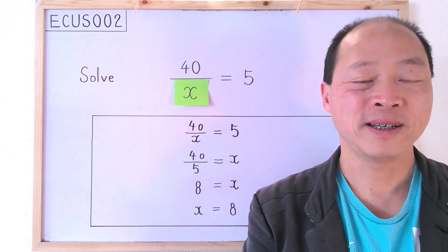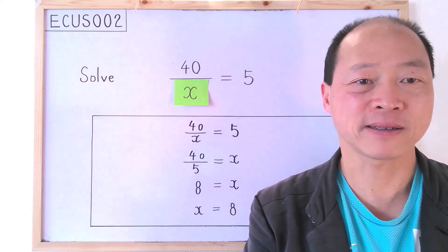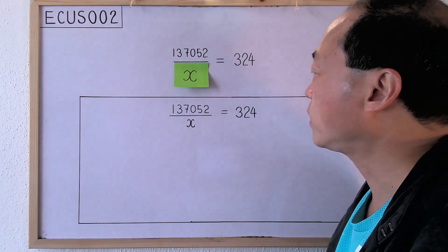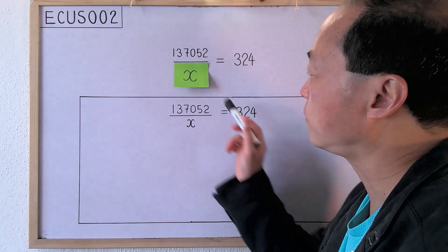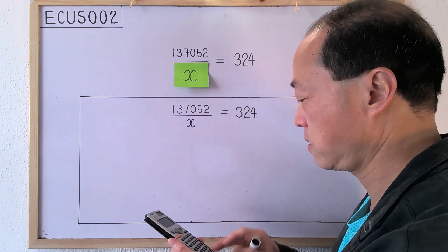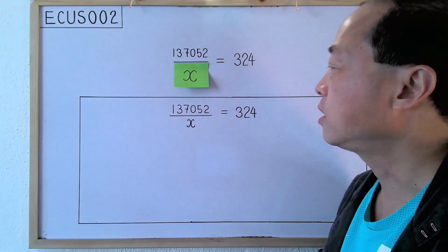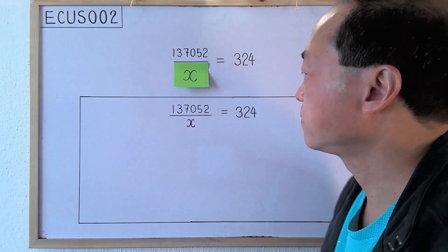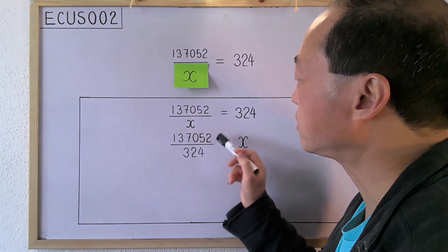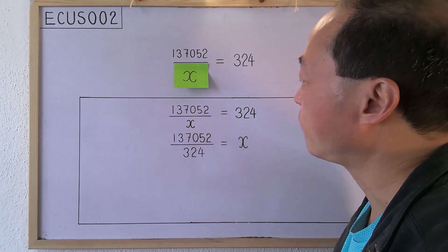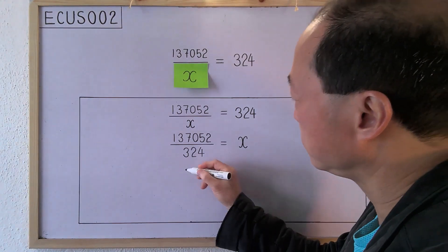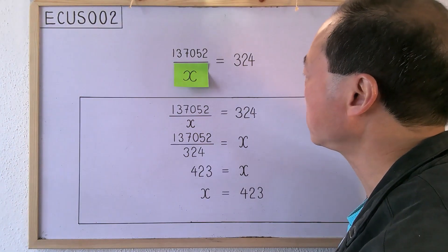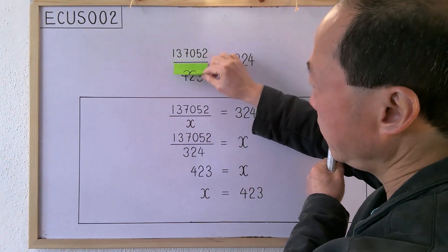Let's solve another equation. First, we copy the equation to solve. Then we use a calculator to check if the number on the right is a factor of 137,052. Yes, it is. This means that the number behind x is also a factor of 137,052. Using a calculator, 137,052 divided by 324 is 423. Lastly, x equals 423. Let's see if the number behind x is really 423. Yes, it is.